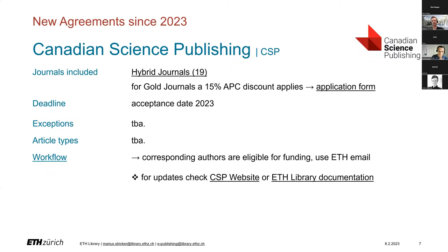Canadian Science Publishing: the agreement with CSP includes 19 hybrid journals, and for gold journals a 15% discount on each APC applies. As with ACS, the acceptance date of your publication is relevant for funding. Since it's already February, we cannot provide you with complete information about all items. Please check our documentation website before submitting so that no unexpected surprises will arise.